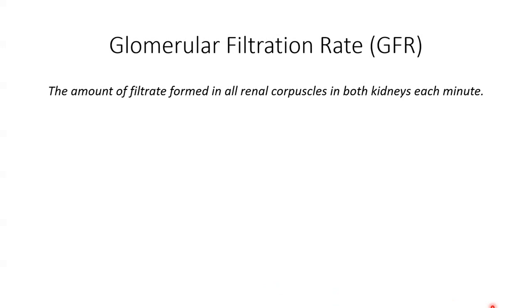Glomerular filtration rate, or GFR, is the amount of filtrate formed in all renal corpuscles — all Bowman's capsules in both kidneys — every minute. In adults, GFR is 125 mL per minute in males on average and 105 mL per minute in females. The greater filtration rate in males is simply due to their larger blood volume, so more blood goes to the kidneys to be filtered.